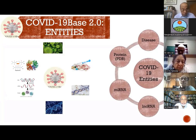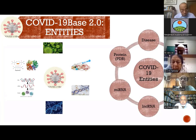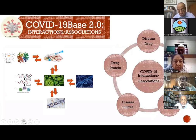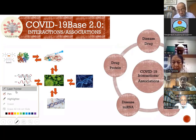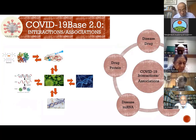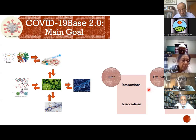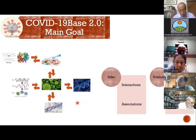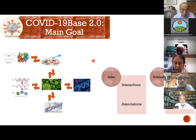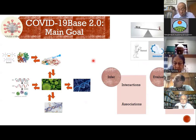We tried to cover disease, drug, gene, lncRNA, miRNA, and protein entities. The idea was to find out relationships and associations between these entities — disease-drug, disease-gene, gene-disease, drug-disease, and so on — so that someone can immediately get an idea of what is going on. We needed to evaluate how good we were, because this was not manually curated; it was done in an automated way using AI and NLP.